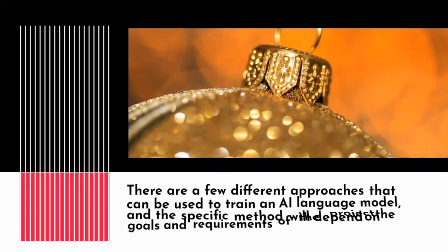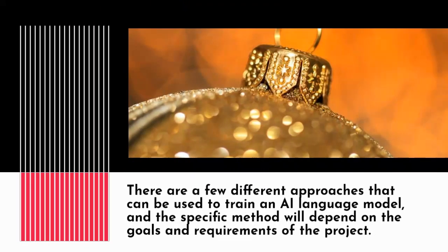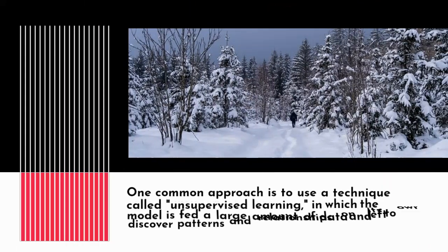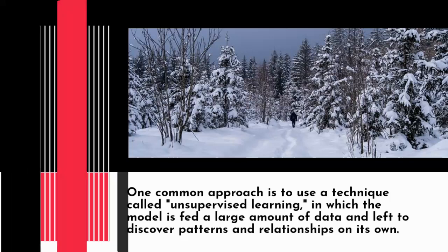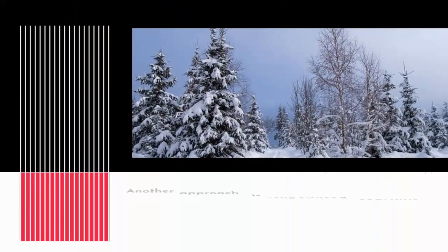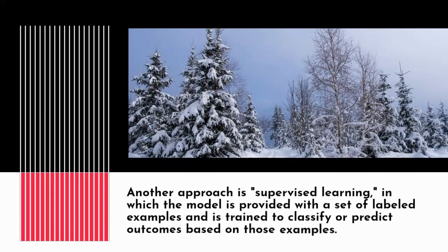There are a few different approaches that can be used to train an AI language model, and the specific method will depend on the goals and requirements of the project. One common approach is to use a technique called unsupervised learning, in which the model is fed a large amount of data and left to discover patterns and relationships on its own. Another approach is supervised learning, in which the model is provided with a set of labeled examples and is trained to classify or predict outcomes based on those examples.